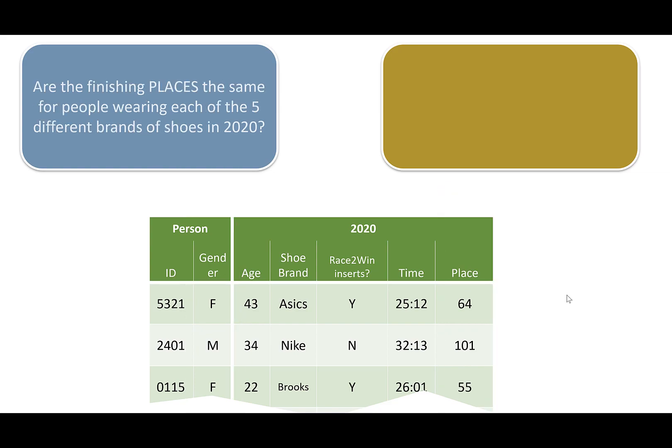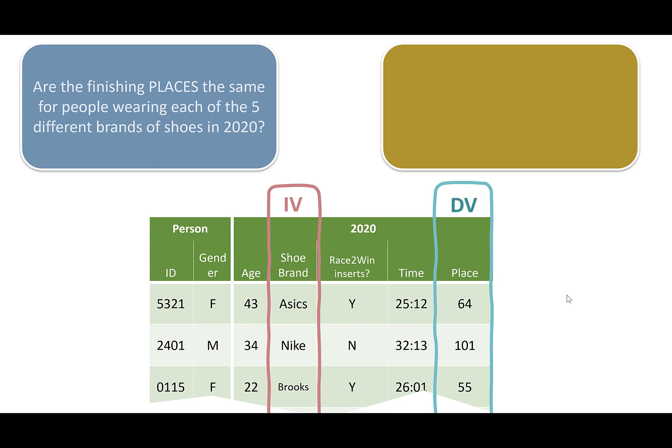What if we ask: are the finishing places for people wearing different types of shoes — Asics, Nike, Brooks, Adidas, New Balance — all the same in 2020? Our independent variable is shoe brand, and our dependent variable is finishing place. We would normally run an ANOVA if our dependent variable had the interval property and was normally distributed, but since place is an ordinal scale, we instead run a test called Kruskal-Wallis, which is the non-parametric equivalent of ANOVA.